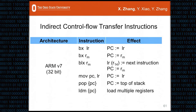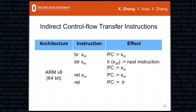Here are the indirect control flow transfer instructions we can use to implement our attack. We can use not only return instructions but also branch instructions, or move instructions to modify the PC value directly. In ARMv7 there is no return instruction, but in ARMv8 there is a return instruction, and we can specify a register after the return to return to the address stored in that register.